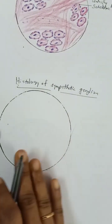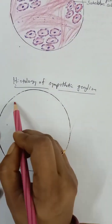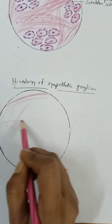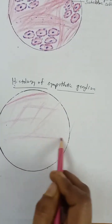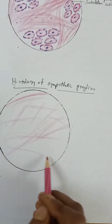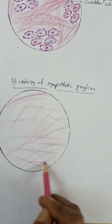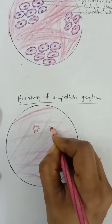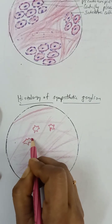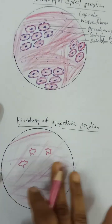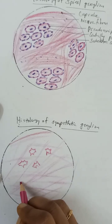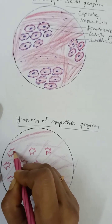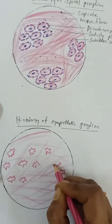Now the histology of the sympathetic ganglion: again there is a capsule, and the nerve fibers are dividing into many groups — lots of divisions are present. The neurons here are multipolar neurons, and unlike the spinal ganglion, they are scattered — they are not arranged in a group.